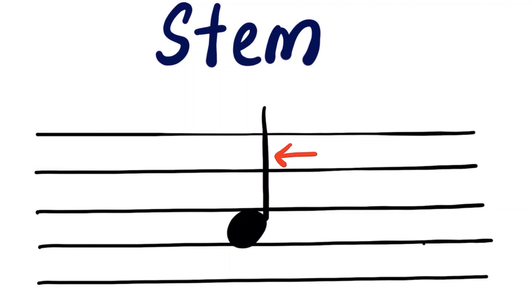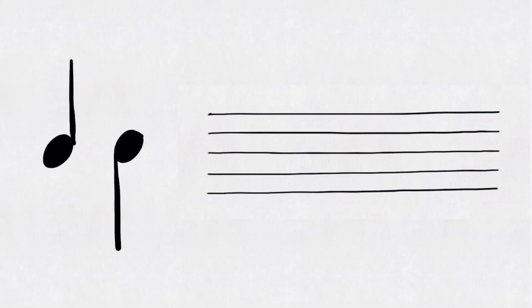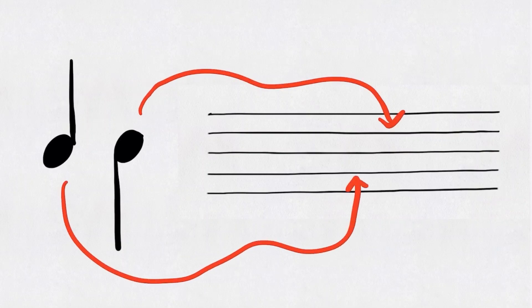So in this video, we are going to learn how to draw the stem and when are we supposed to draw the stems pointing upwards and when are they supposed to be pointing downwards. So we know that when a note has a stem, the stem can either go up or down. So how do we know whether we should draw the stem upwards or downwards?